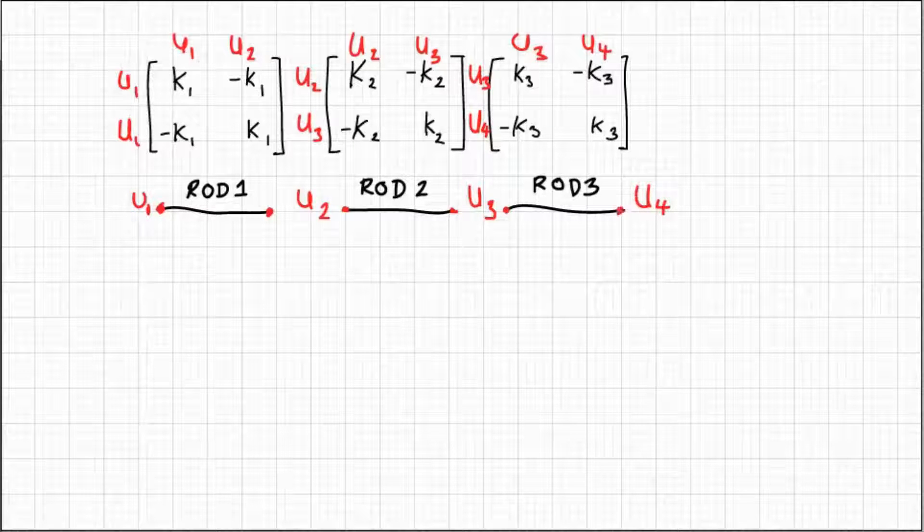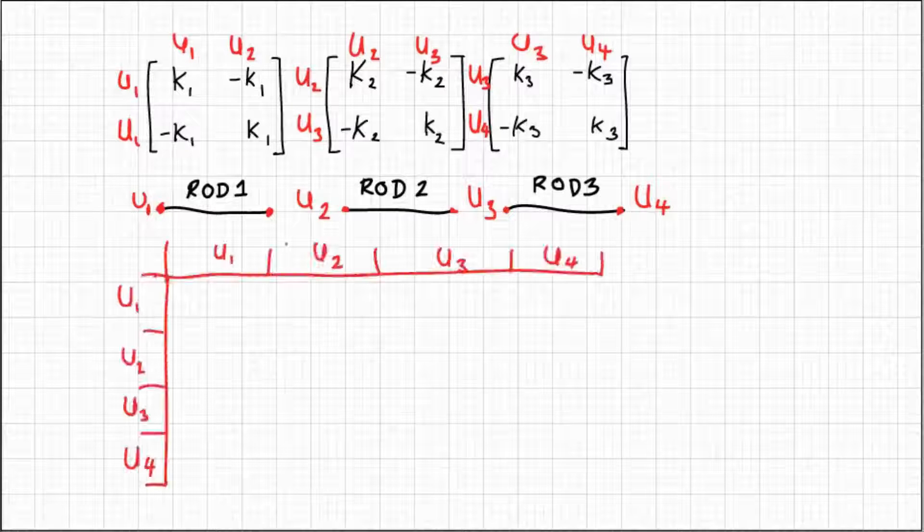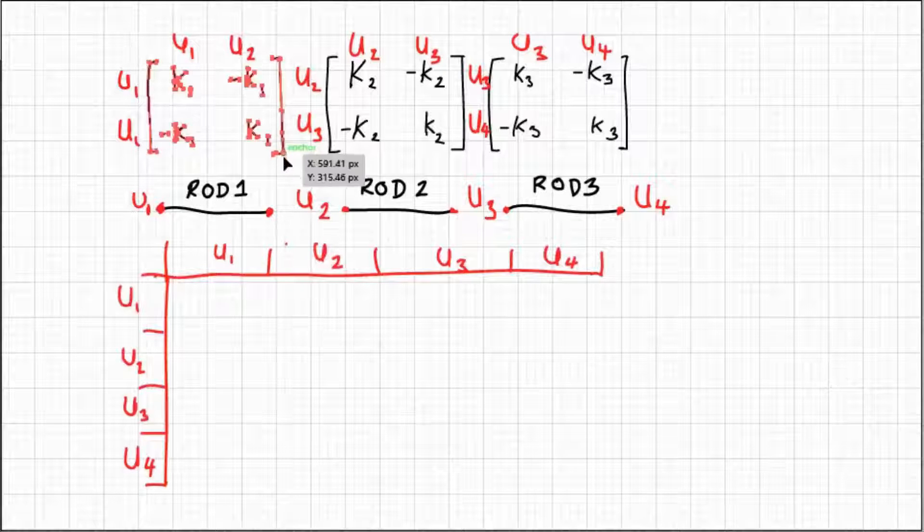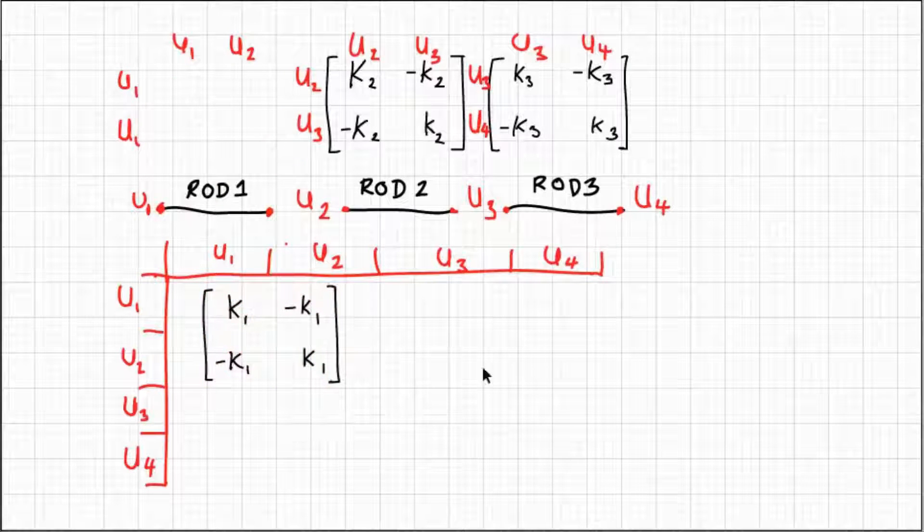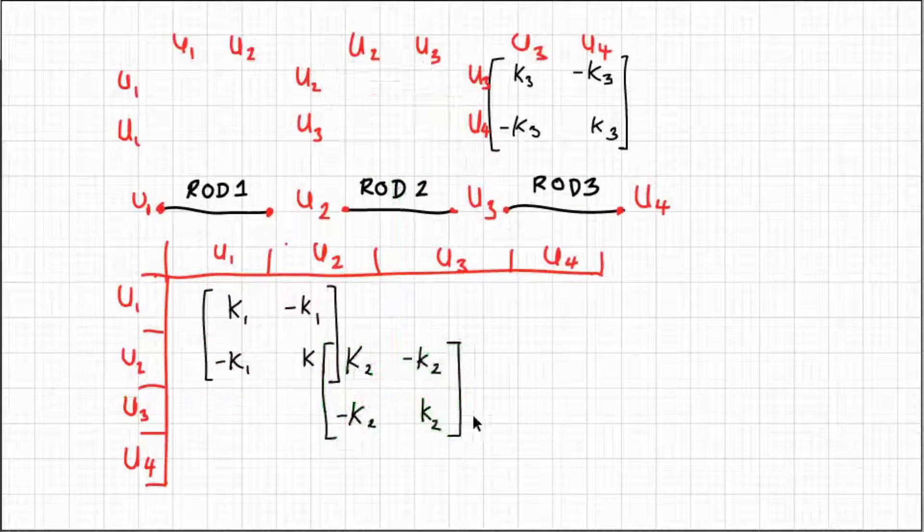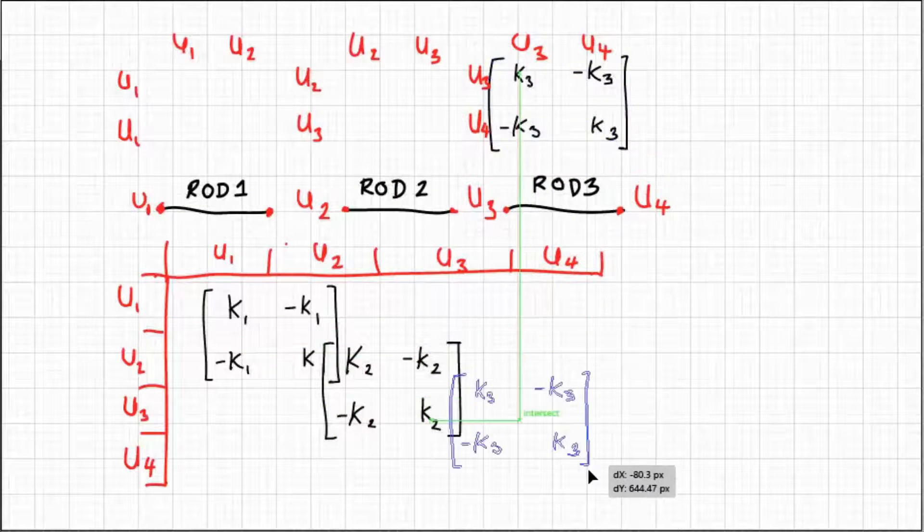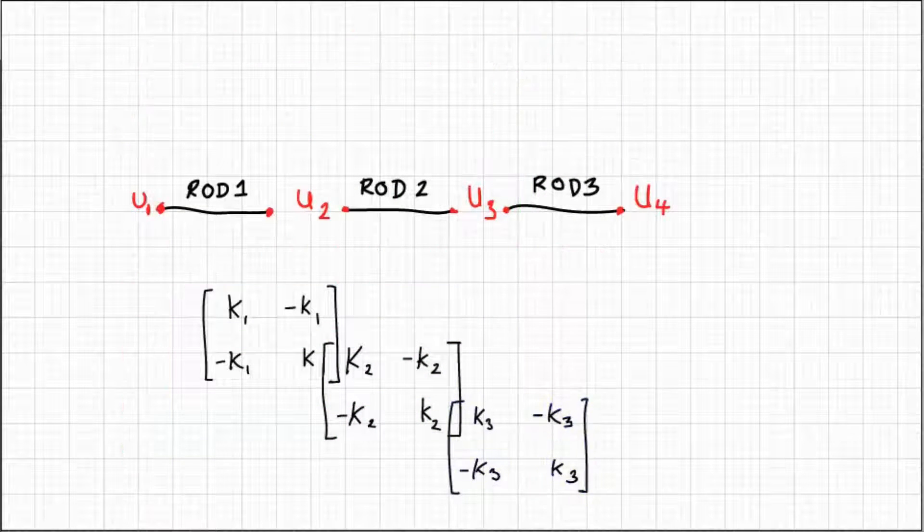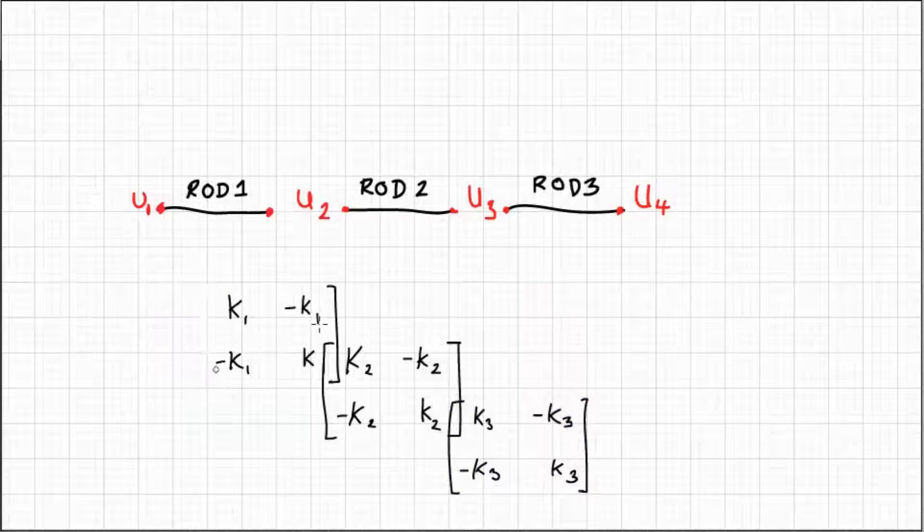Here is a grid which is going to help us map the element stiffness matrices into the overall stiffness matrix. Rod one's element stiffness matrix is pulled in and positioned. Now we do the same with rod two, notice the overlap, and finally we pull down rod three and its stiffness term is also assembled in there.